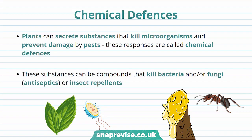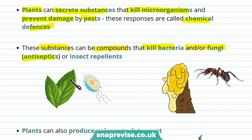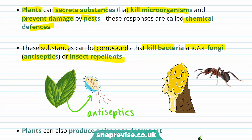As well as physical defences, plants can also have chemical defences. This is when plants secrete substances that kill microorganisms and prevent damage by pests. For example, these substances can be compounds that kill bacteria and or fungi — these are called antiseptics. They can also be insect repellents. For example, mint produces antiseptics that kill bacteria.